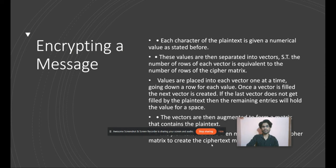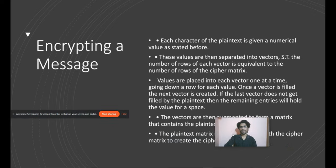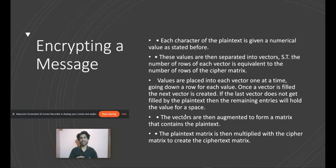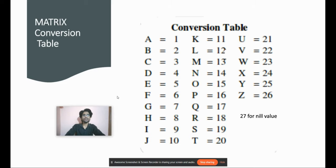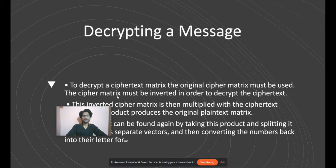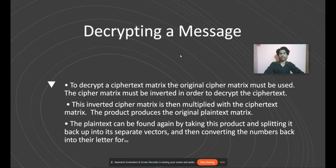Now let's talk about encrypting our message. All the terminologies I have explained are going to be used in encrypting and decrypting. We have a conversion table — a matrix conversion table — in which we encode A as 1, B as 2, and so on. For 27 it's a null value: if we have a space in between any code, we use 27 in its place. For decryption, we multiply the inverse of the cipher matrix by the given encoded code to decrypt the message.